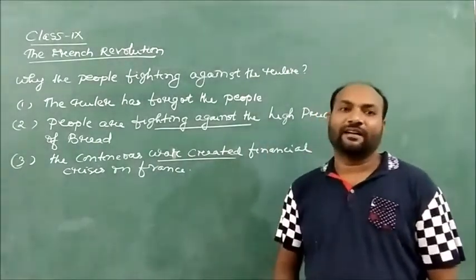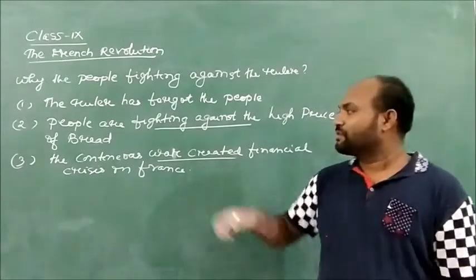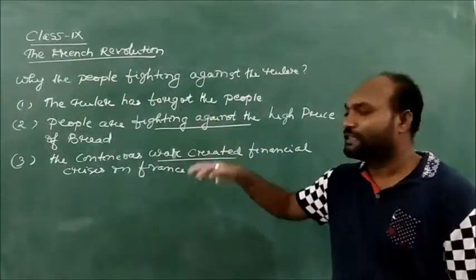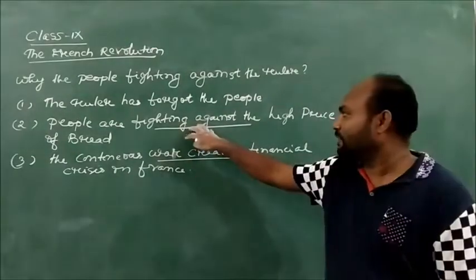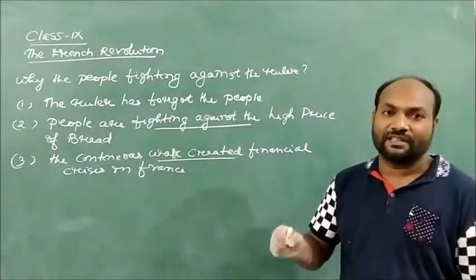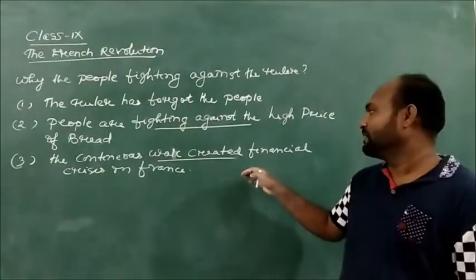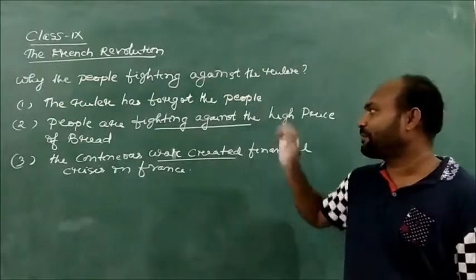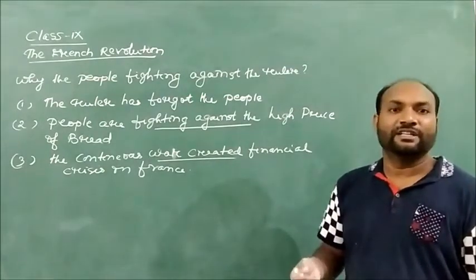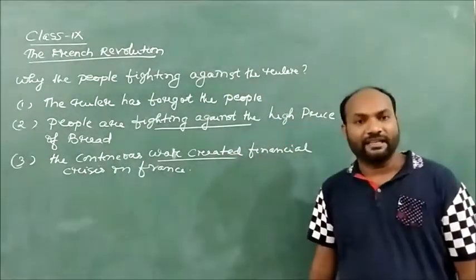Due to increasing high prices of bread the peoples were fighting against the rulers and they did not want to have the monarchy system. They were not only fighting against the high price of bread, but there were a lot of immediate causes as well as many other reasons. There was the increasing of financial prices, increasing price rates, the ruler foregoing the peoples, and the peoples paying heavy taxes to the government. Due to all these reasons they did not want the monarchy system and that is why the peoples were fighting against the ruler.